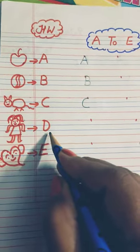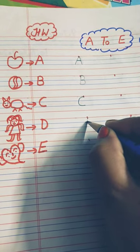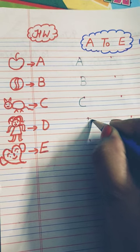Next, D, doll. How do we write this? First, standing line, then curved shape.